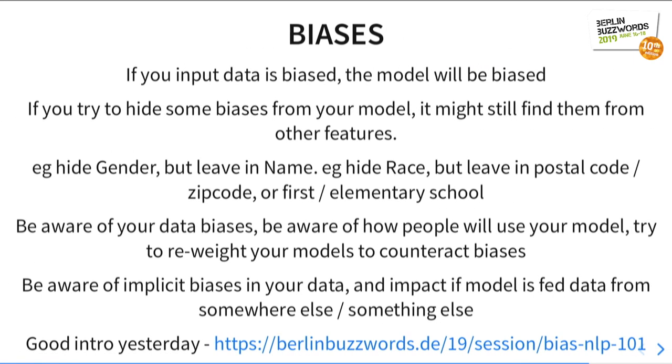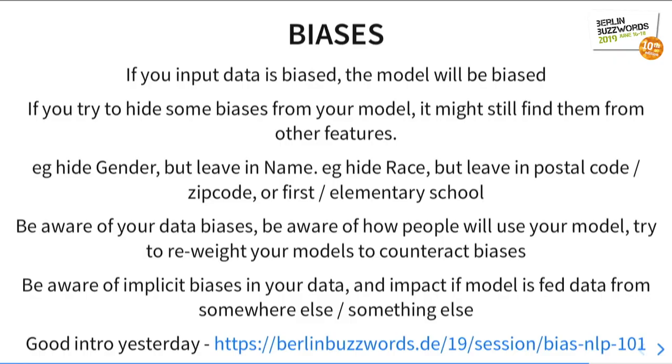Already mentioned bias a little bit. Your data sets are probably going to be biased — certainly if you're working with text written by humans. Your AI can find extra features: you might try to hide gender but leave in the author's name, and your AI will learn what female names look like. Equally, you might leave out the race field but leave in the postal code, and it turns out people of different races tend to live in different places — your AI has just figured out the race even though you didn't give it to it. So think about the bias, think about how people are going to use your data and model, make sure you correct for it or make them aware of it. There was a really good intro yesterday about the bias in text and ways to correct for it.